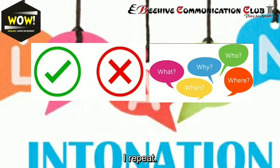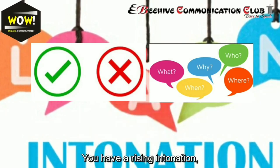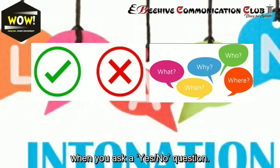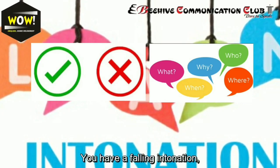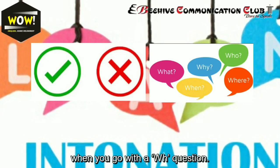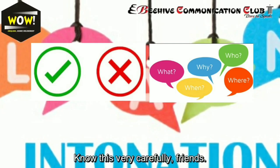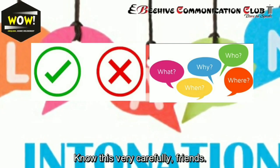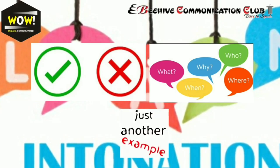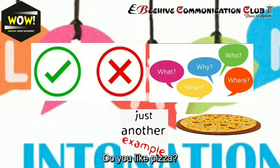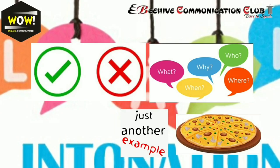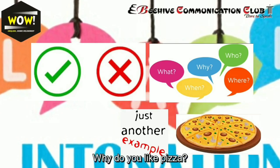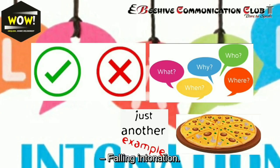To repeat: you have a rising intonation when you ask a yes-or-no question, and a falling intonation when you use a WH question. Know this very carefully. For example: 'Do you like pizza?' — rising intonation. 'Why do you like pizza?' — falling intonation.